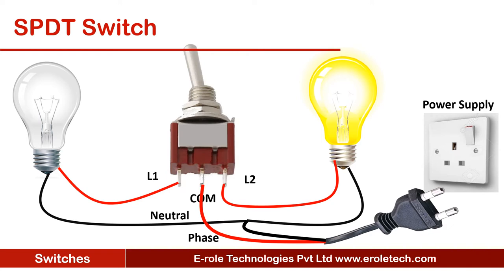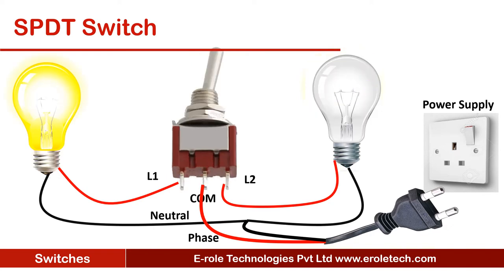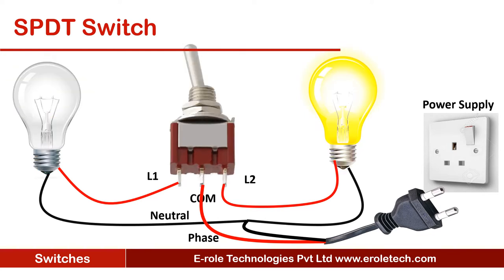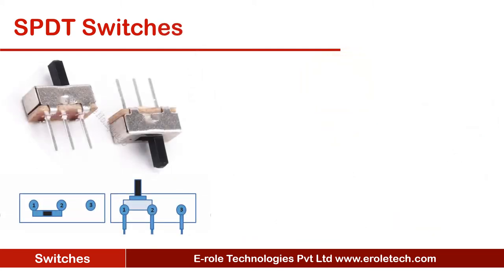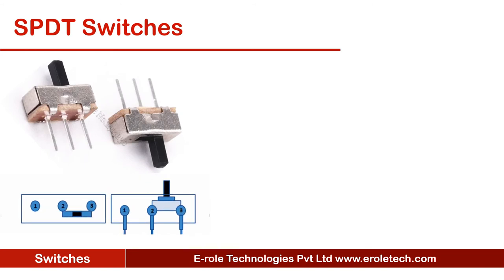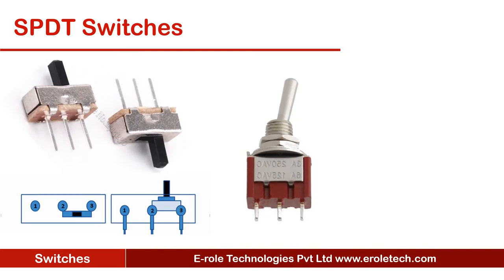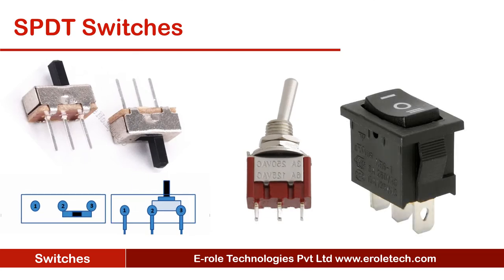For example, you can control two bulbs using a single SPDT switch. When the left bulb is on, the right bulb turns off, and when the right bulb is on, the left bulb turns off. These are some common types of SPDT switches: a sliding switch, which needs to be slid to the left or right to operate; a toggle switch; and an up-down switch.